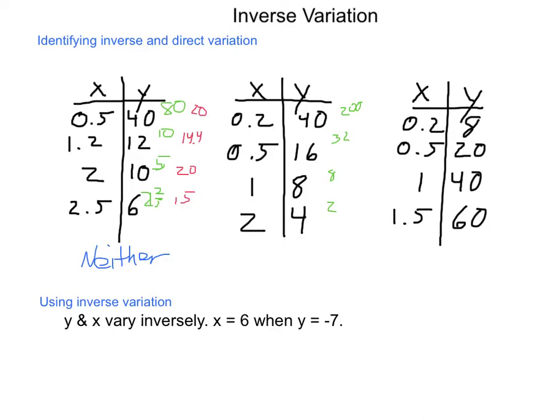Let's look at inverse variation. What is the product? What is 2 tenths of 40? And the answer is 8. 16 times a half is 8. 8 times 1 is 8. And 2 times 4 is 8. Since our products are always the same, this shows inverse variation. Same as our road trip example.